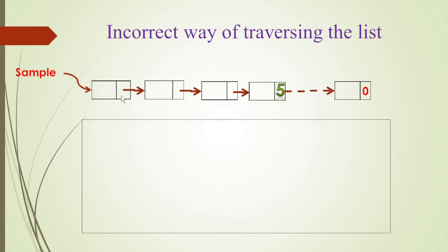This is to show the incorrect way of traversing a linked list. We have a linked list with the first node pointed to by sample. We want to print the content of all nodes up to the node which has address 5. All those nodes need to be printed. We use a pointer Ptr which points to the first node.